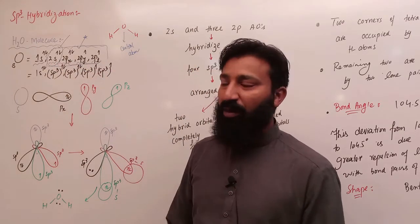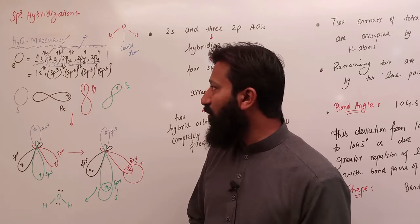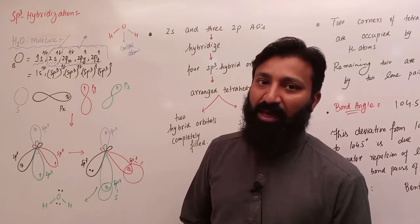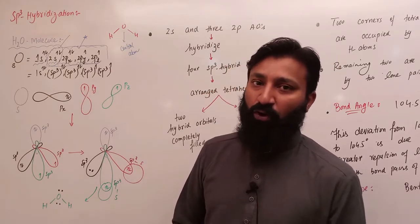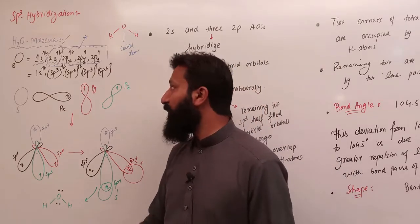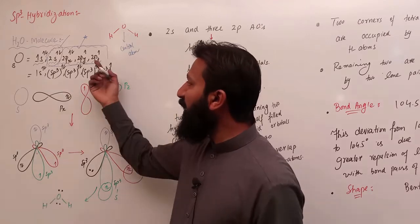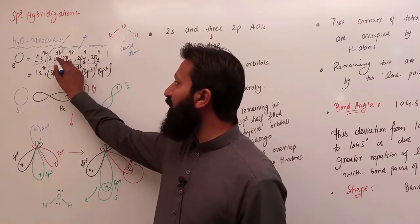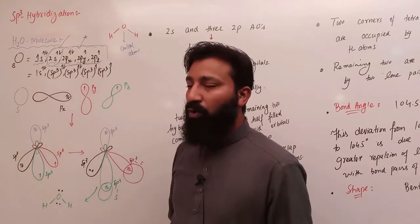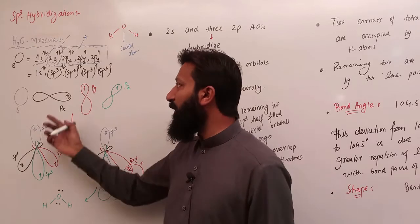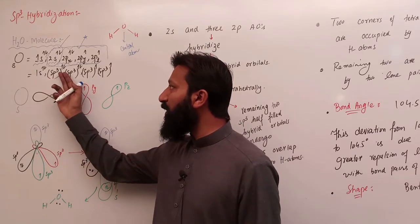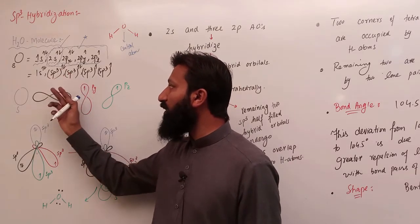1S and 3P atomic orbitals hybridize with each other and form 4 SP3 hybrid orbitals। तो यहाँ पर यह 1S and 3P atomic orbitals hybridize करेंगे और hybridization के बाद बनाएंगे 4 SP3 hybrid orbitals। Valence shell में total हमारे पास 6 electrons हैं, उन 6 electrons में से 1st hybrid orbital में 2 electrons।